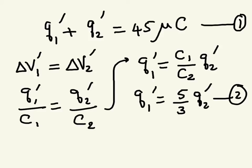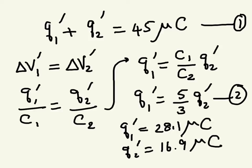And when you do that, you end up getting Q1 prime is equal to 28.1 microcoulombs and Q2 prime is 16.9 microcoulombs. So we can quickly check that the sum does indeed equal 45 microcoulombs. And if you substitute, we can get delta V by either taking Q1 prime from here divided by C1, which is the 5 microfarads, or take Q2 prime divided by 3 microfarads. Either way you get your new potential difference delta V prime to be equal to 5.63 volts.